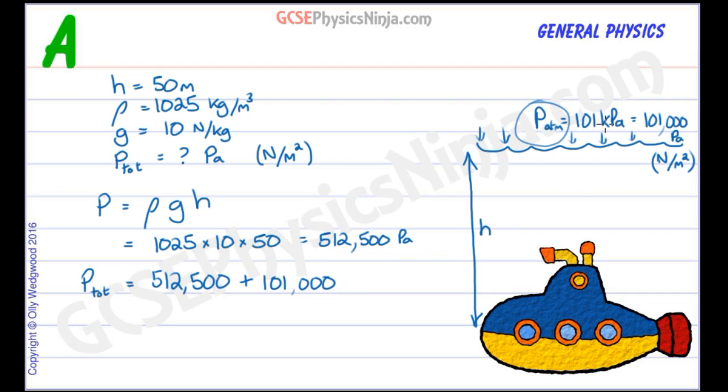Remember, kilo means a thousand. And adding those up, we get 613,500 pascals. And let's put that into kilo pascals because it's a bit easier to read. 613.5 kilopascals, or that would be kilonewtons per meter squared.